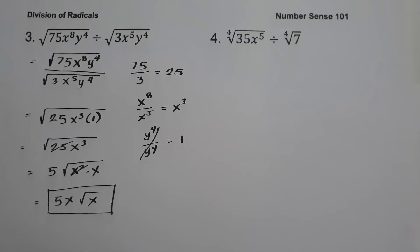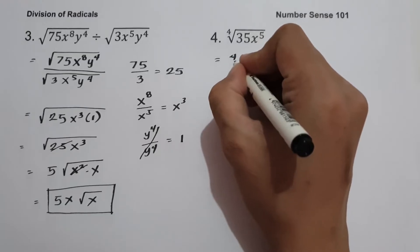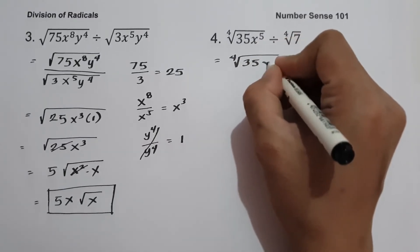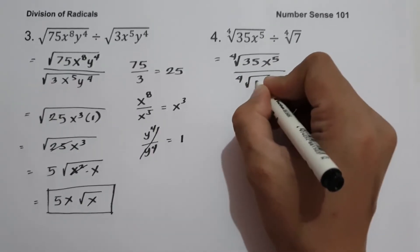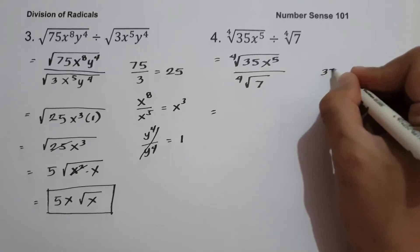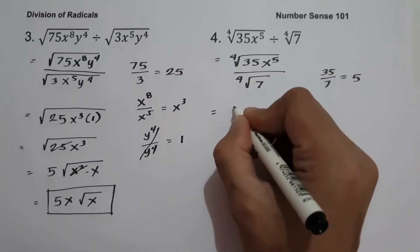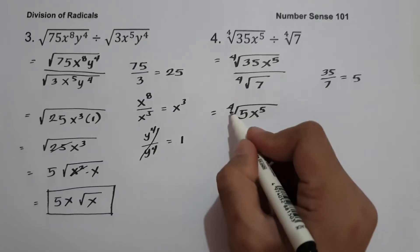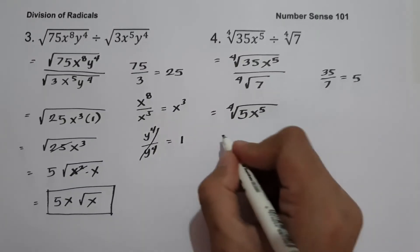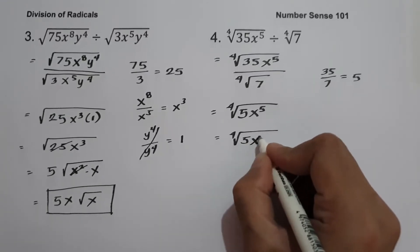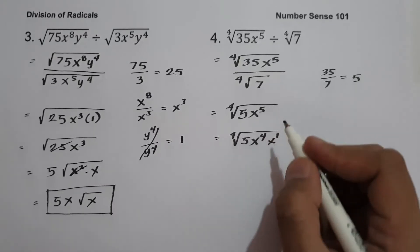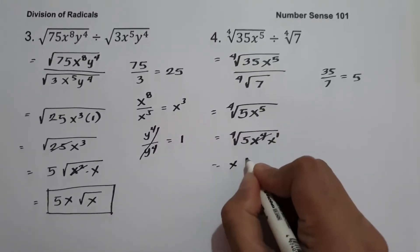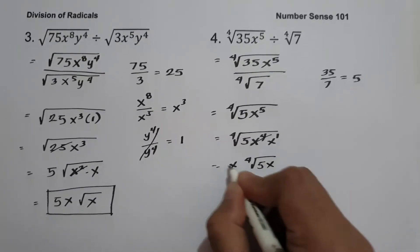On example number four, we have 4th root of 35x raised to 5 divided by 4th root of 7. Our index is 4, so let us write in fraction form: 4th root of 35x raised to 5 over 4th root of 7. 35 divided by 7 is 5, giving us 4th root of 5x raised to 5. Since the index is 4, we divide the exponent by 4: 4th root of 5x raised to 4 and x raised to 1. The 4th root of x raised to 4 is x, so the answer is x times 4th root of 5x.